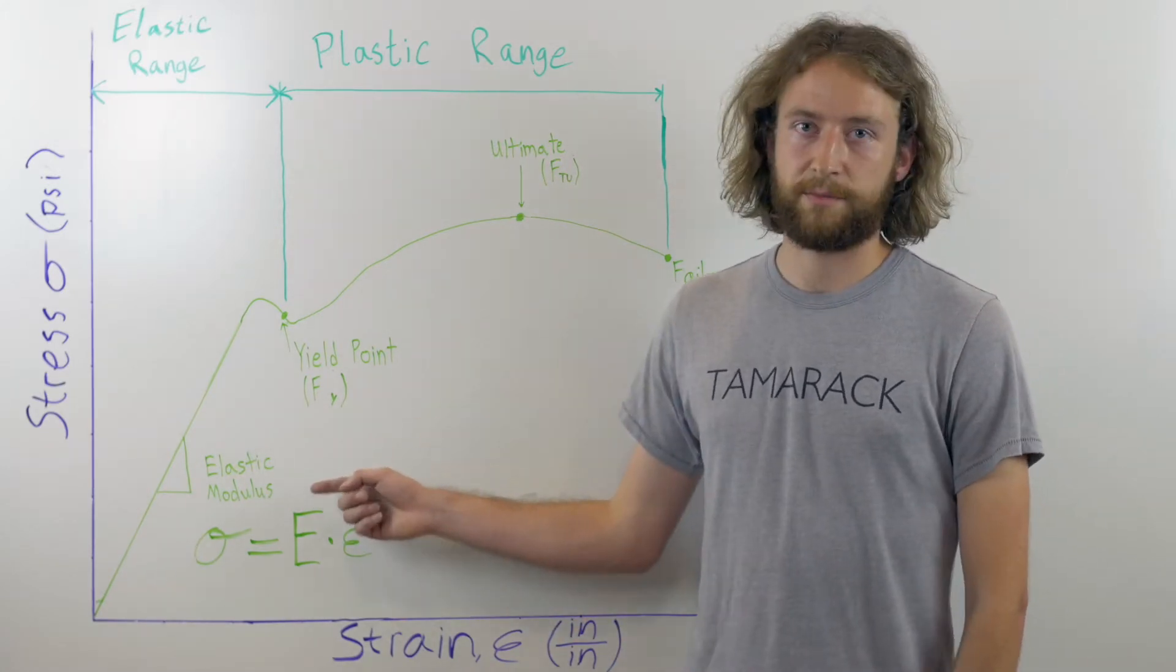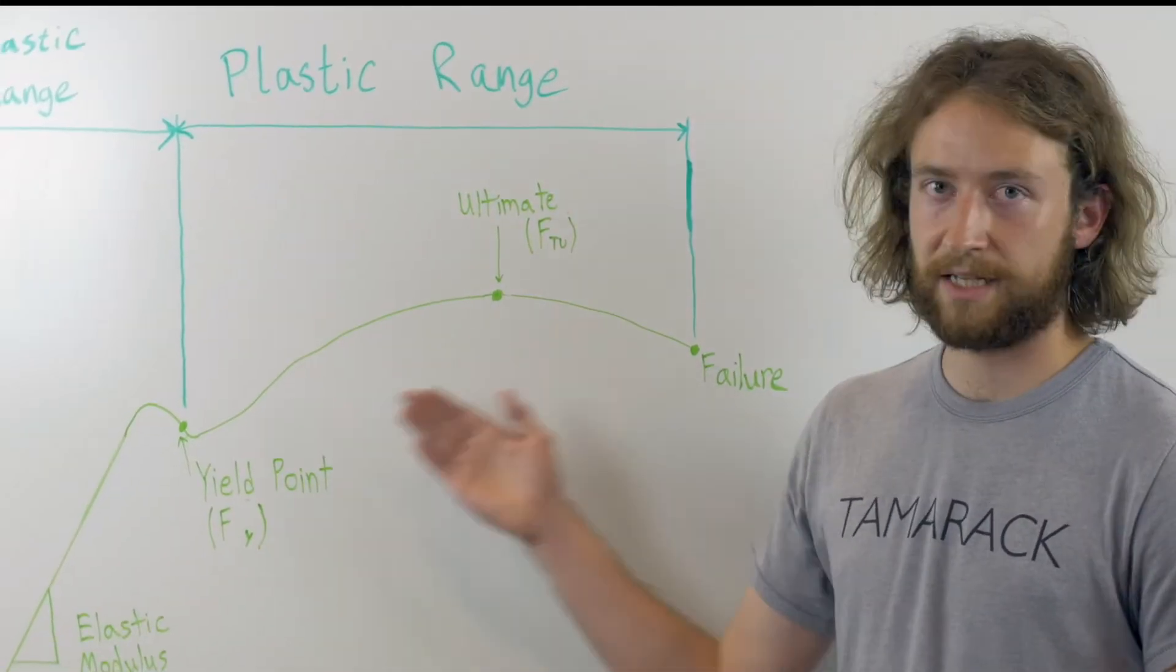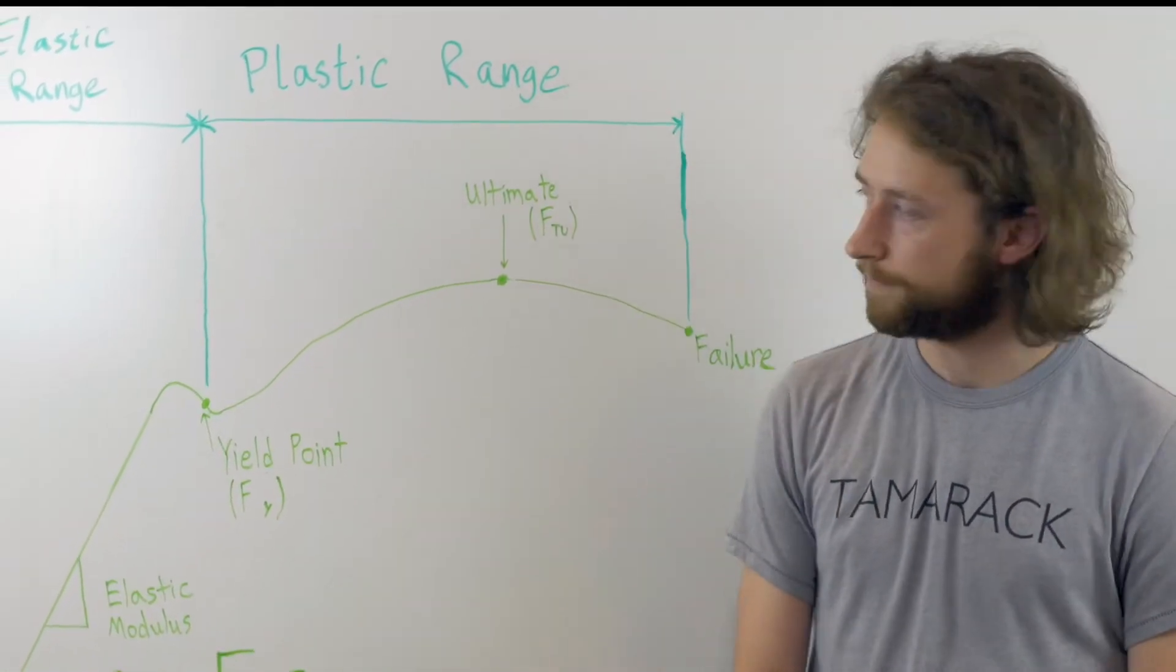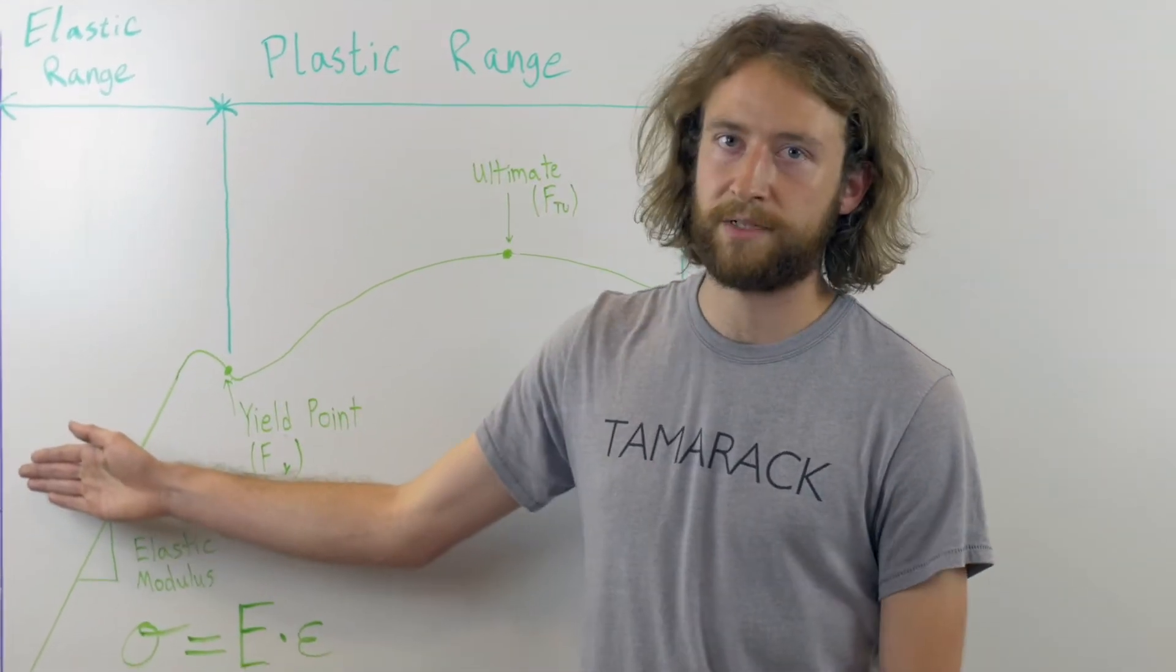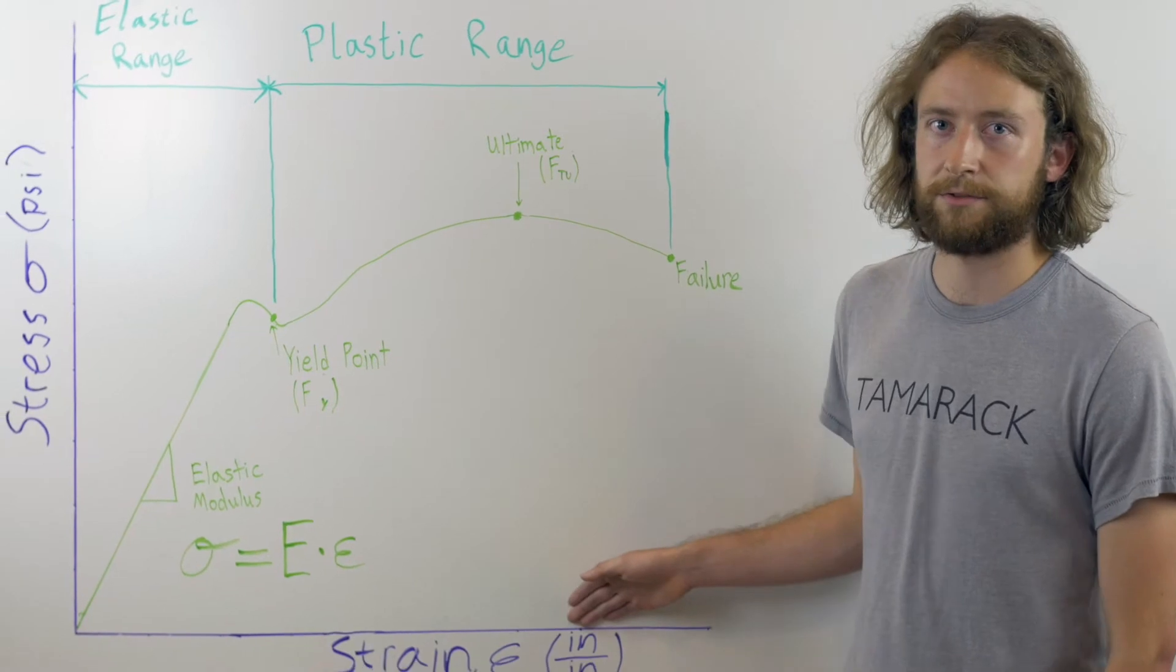The best way to define the elastic modulus is by taking a look at a stress-strain curve. What we have here is a typical stress-strain curve for aluminum. On the y-axis we have stress, which is a measure of the internal load, and on the x-axis we have strain, which is a measure of deflection.